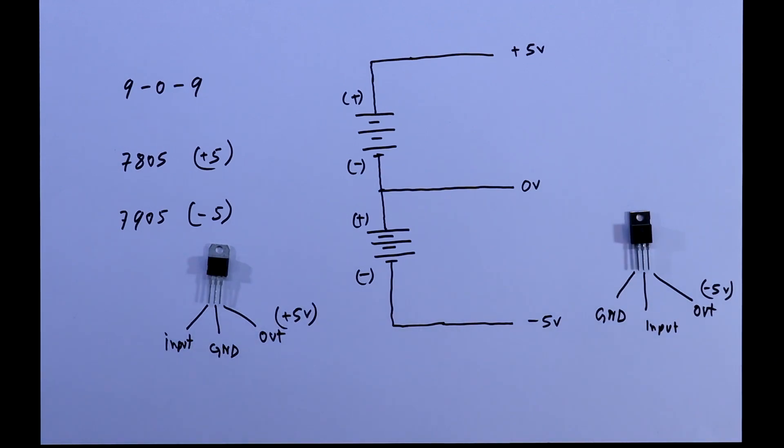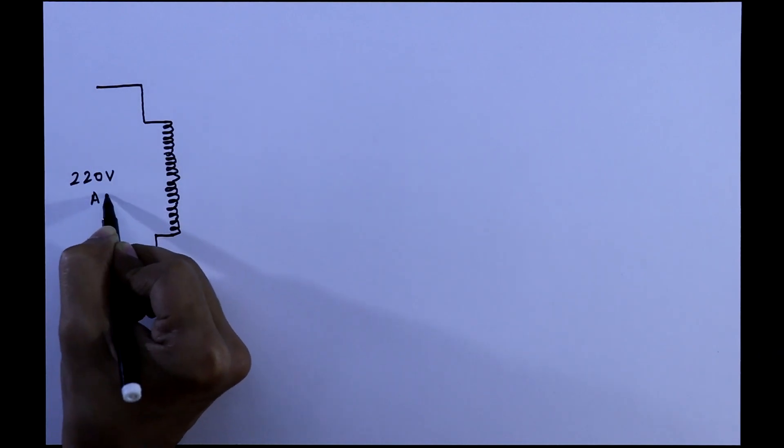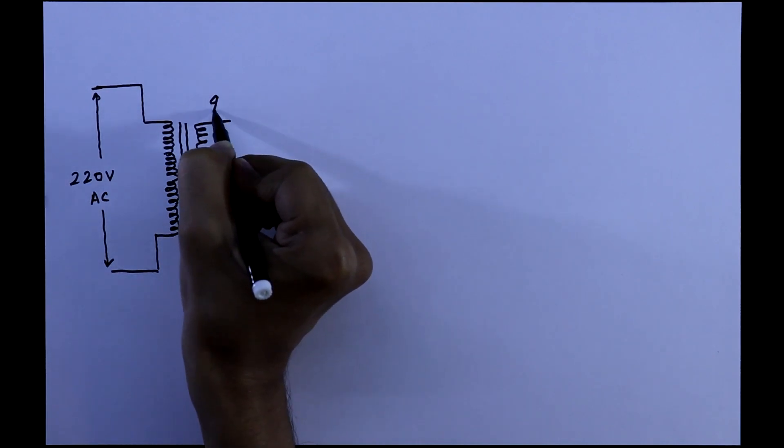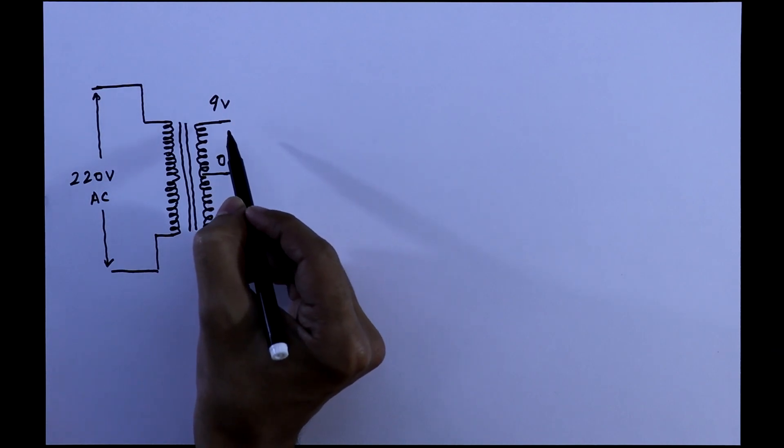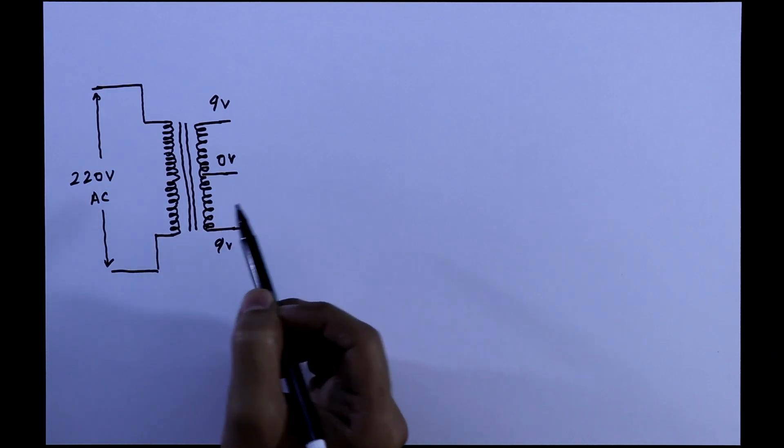Now we will see the circuit. Here this is the transformer, input is 220 volt AC and the output is 9-0-9. We will take this side as negative volt and this side as positive volt. As it is AC, first we have to convert it to DC.